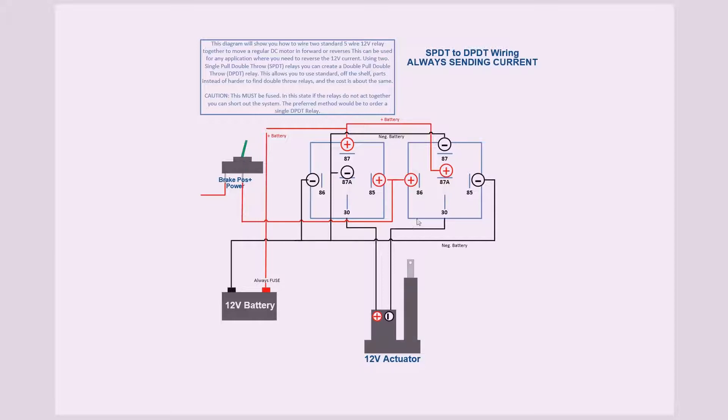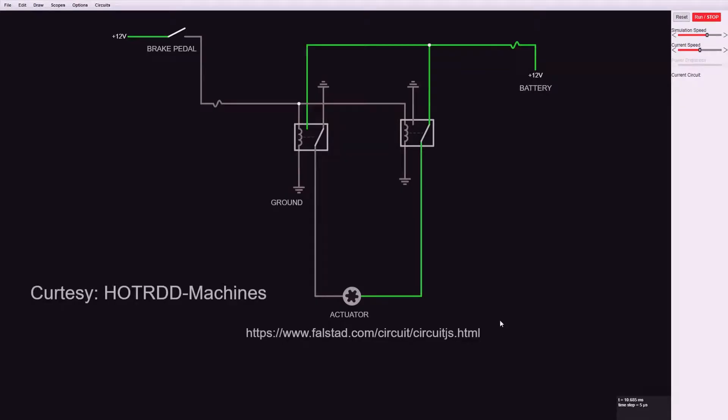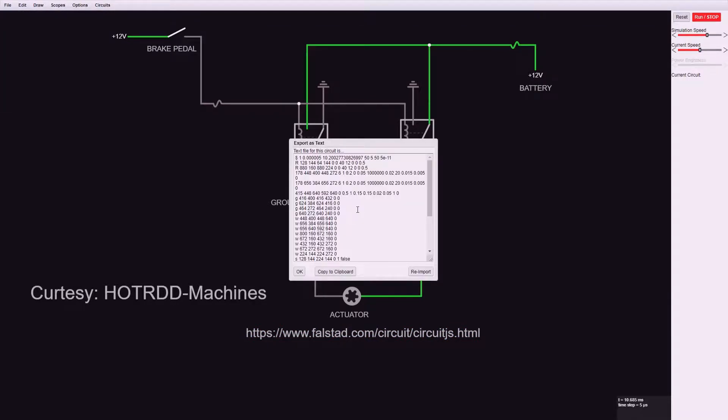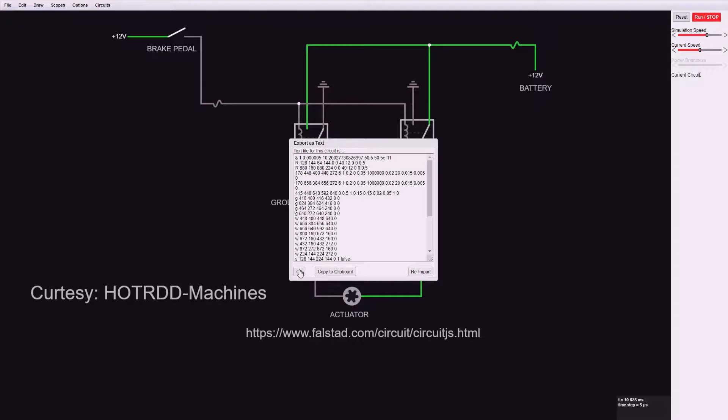The way we've simulated this is we've actually used free online simulation software. You can go to this website, draw this up, and do this yourself, or I'm going to try and include the text in the description below, and you can just paste that into the simulator. It'll give you the exact diagram you see here. So what we have is a brake pedal, positive power from the brake pedal, two relays, an actuator, and power from the battery.